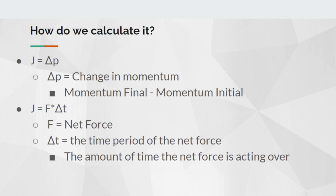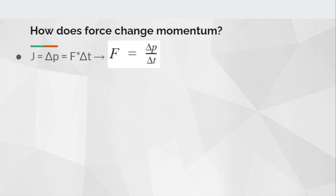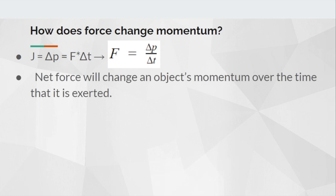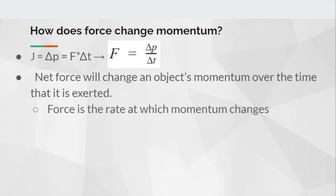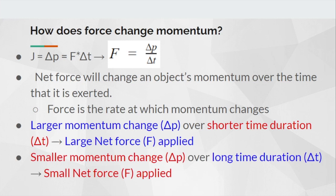The time period refers to the amount of time that the net force is acting over. Looking at these equations, net force will change an object's momentum over the time that it is exerted. Therefore, force is the rate at which momentum changes. A larger momentum change over a shorter time duration is going to result in a larger net force being applied, and a smaller momentum change over a longer time duration results in a smaller net force.